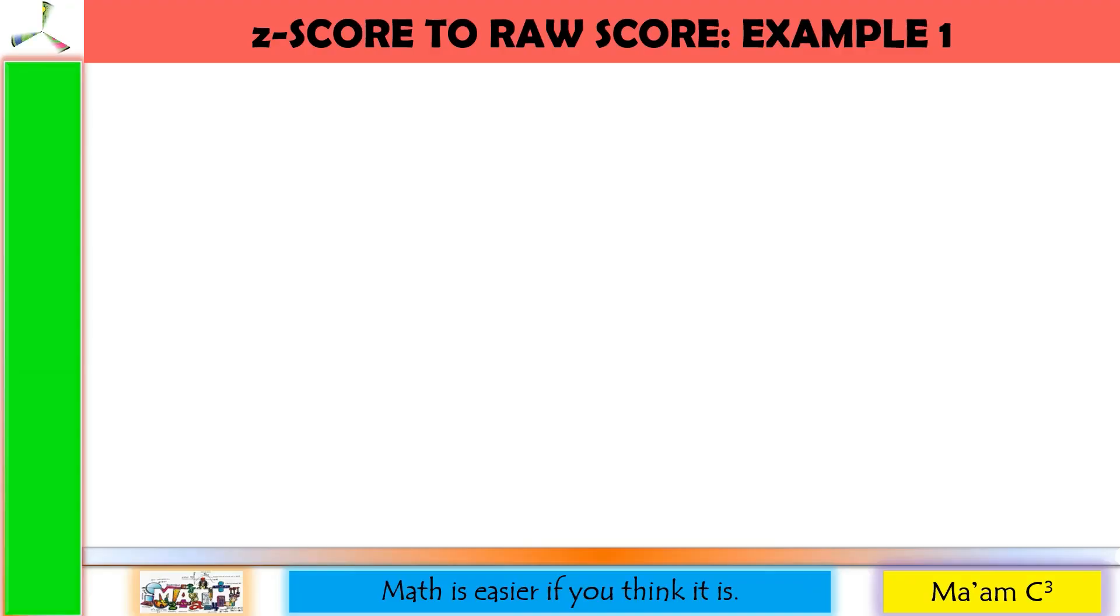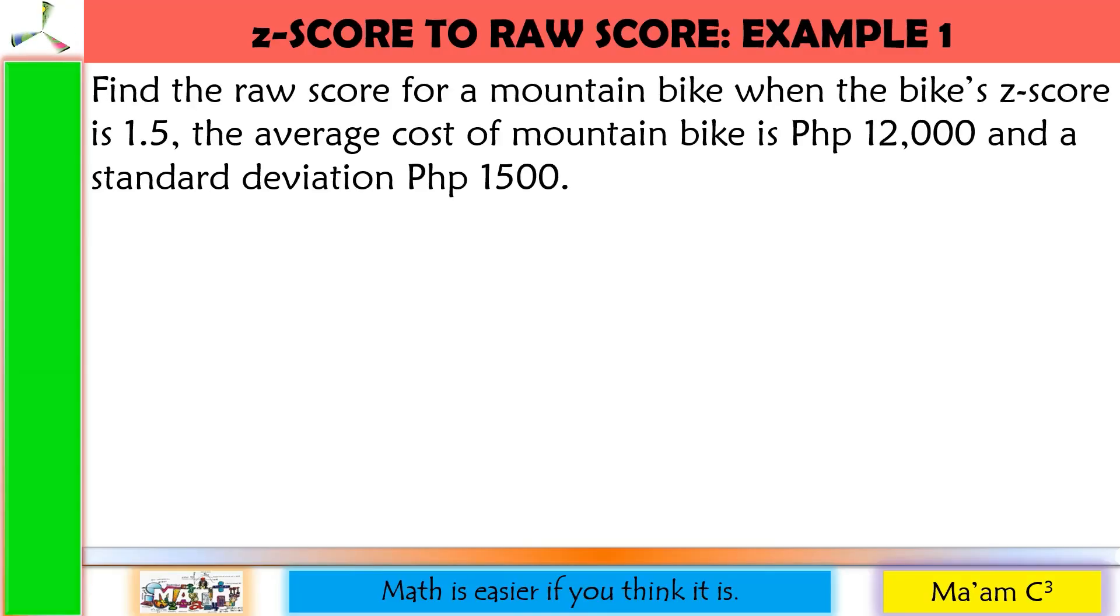This time, let us interchange. Let us convert Z-score to raw score. Find the raw score for a mountain bike when the bike's Z-score is 1.5. The average cost of mountain bike is 12,000 pesos and a standard deviation of 1,500 pesos. So again, first we have to identify the mu that is the average and that is 12,000. Then the standard deviation, our sigma is 1,500. This time, the given is the Z-score and that is 1.5.